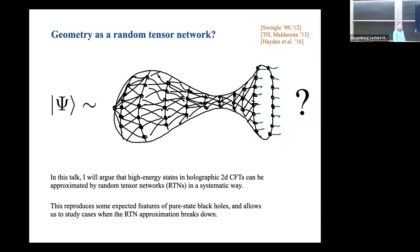In this talk, I want to make this quantitative in a certain model. I'll argue that high-energy states in holographic 2D CFTs can really be approximated by random tensor networks in a systematic way. This tensor network reproduces expected features of pure state black holes, and also allows us to go beyond that. By getting it from a systematic approximation, we can ask where it breaks and try to go beyond that approximation to see in what ways space is actually not like a random tensor network.